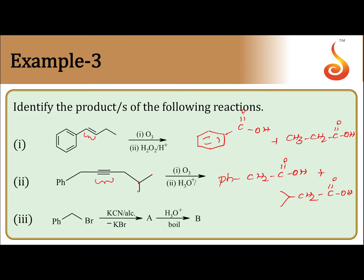That is the second reaction. Now let us see the third reaction. One of the reactants is C₆H₅CH₂Br, treated with KCN. The product will be C₆H₅CH₂CN. This compound on hydrolysis — cyanide on hydrolysis — gives a carboxylic acid: C₆H₅CH₂COOH. These are the products.